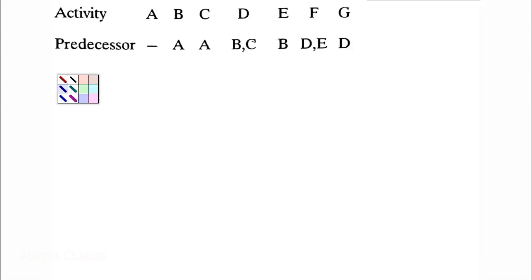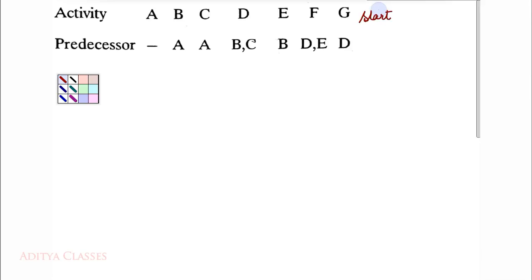Now before we start making the network, we make an initial analysis. We look at who will start the network, who will end the network, and what the dummy activities will be.